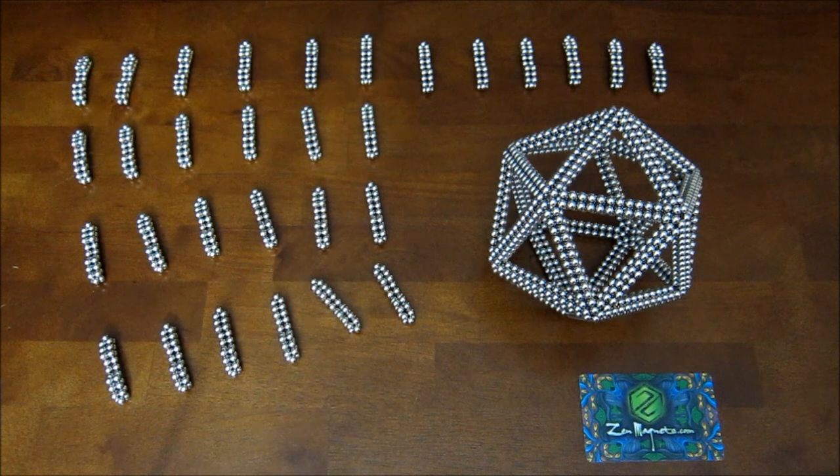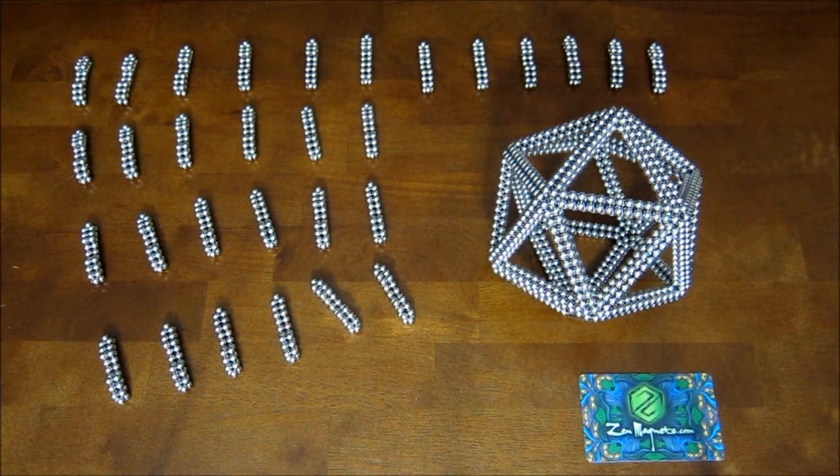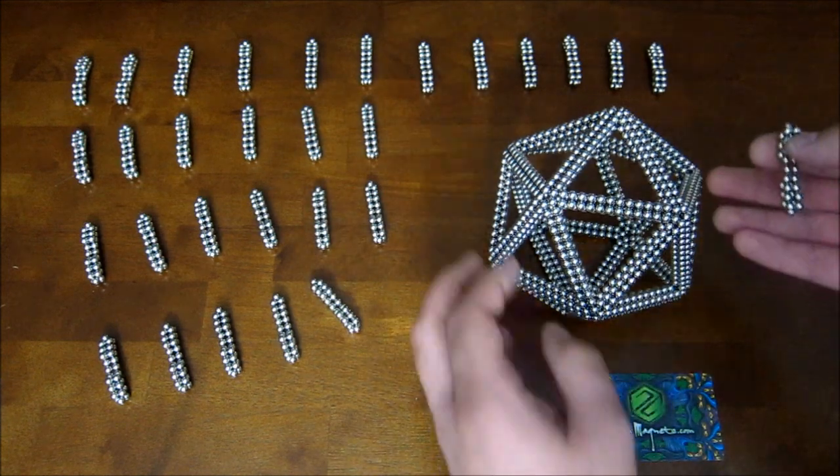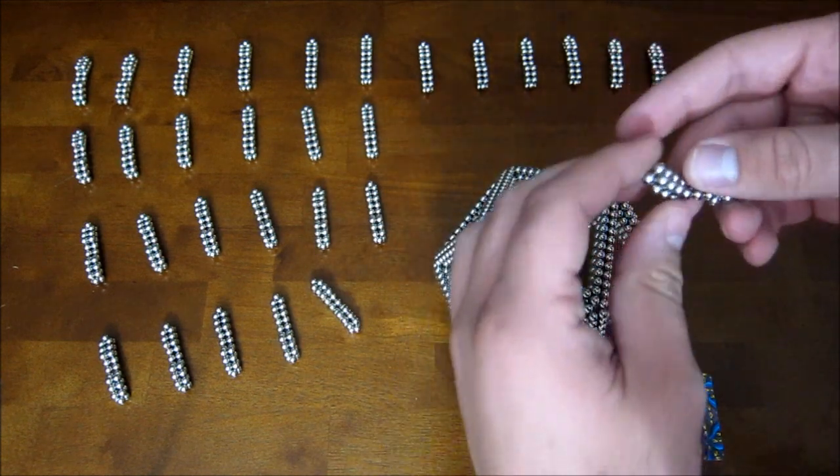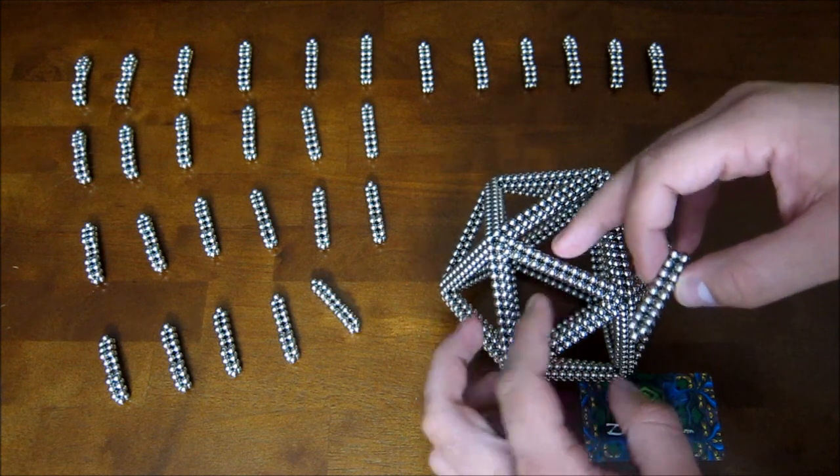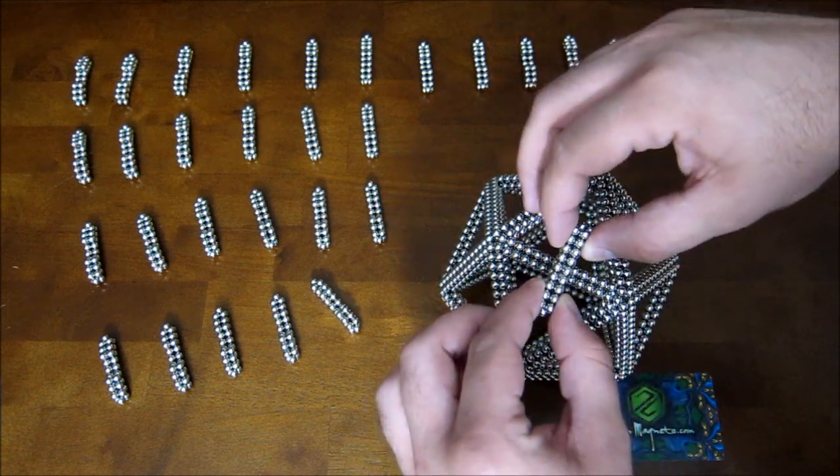And again, you need 30 of them. And so what you do is you take these pieces and you put them right across the center of each of these bars.